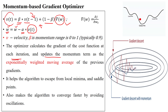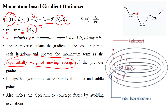The optimizer calculates the gradient of the cost function at each iteration and updates the momentum term based on an exponentially weighted moving average. This uses previous step gradients, giving some weight to prior step gradients, which helps the algorithm escape local minima and saddle points.